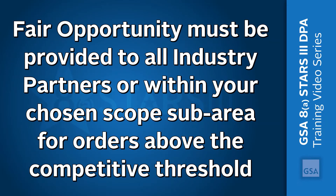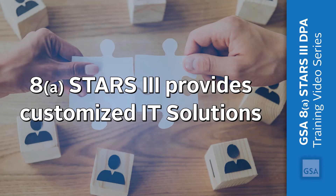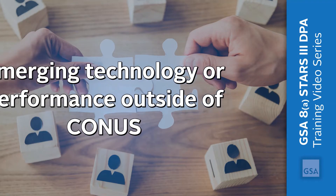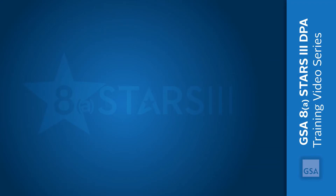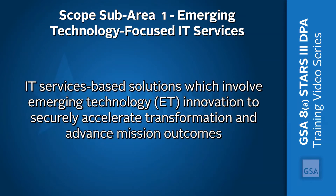Orders above the competitive threshold must be competed amongst all the industry partners or all within your chosen scope area. The 8A STARS III GWAC provides federal agencies with customized IT services and IT services-based solutions and has two additional scope sub-areas to meet your mission requirements. The scope sub-areas are available for task orders requiring either emerging technology or performance outside of a CONUS location. Scope sub-area 1 provides for IT services-based solutions which involve emerging technology, ET, innovation to securely accelerate transformation and advance mission outcomes.